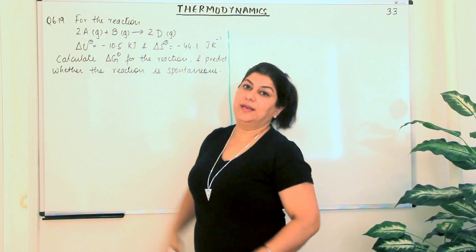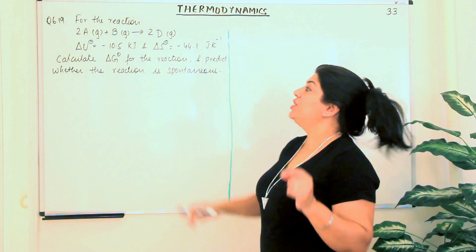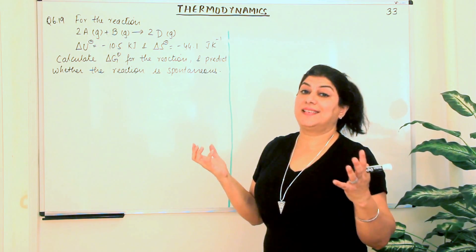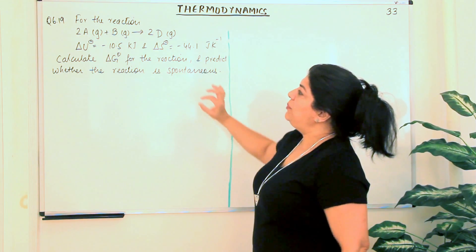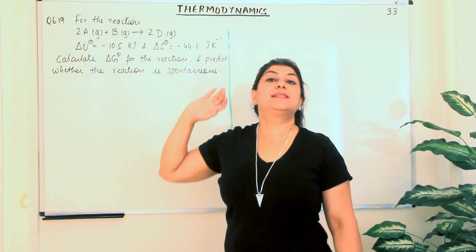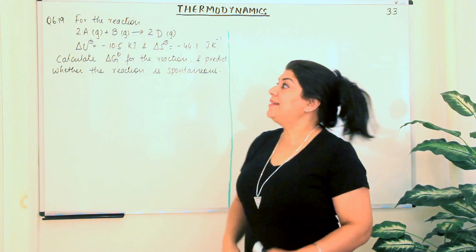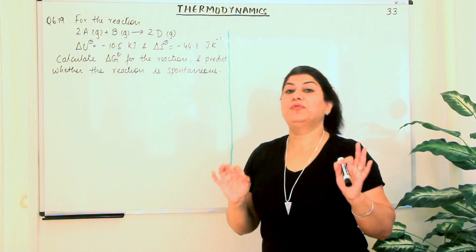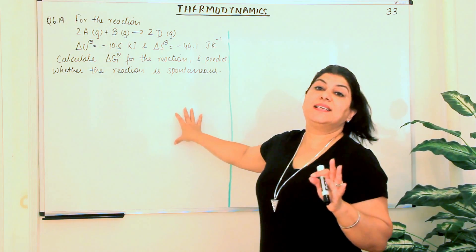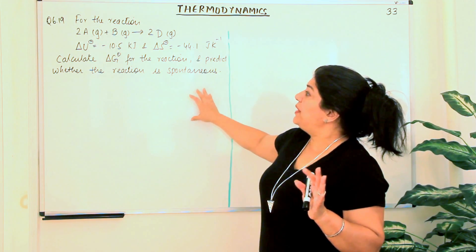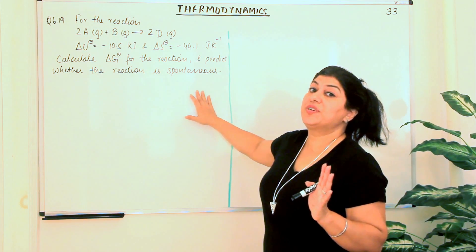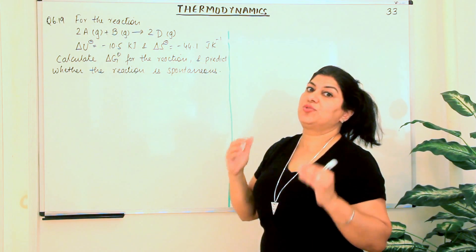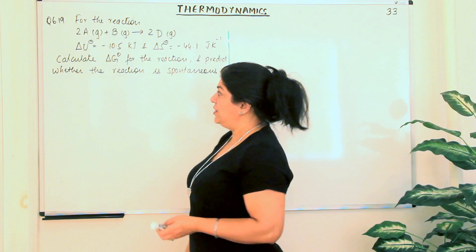The knot symbol means it is the standard change in internal energy and the standard change in entropy — meaning the reaction is taking place under standard conditions. Standard conditions are where all the reactants and their products are in their most stable form at 298 Kelvin, with temperature 298 Kelvin and pressure 1 bar.